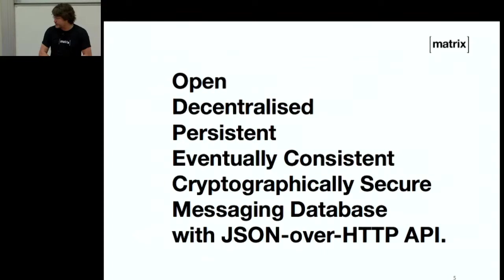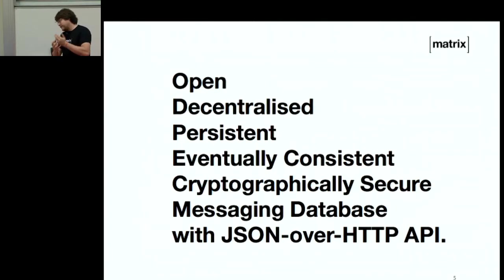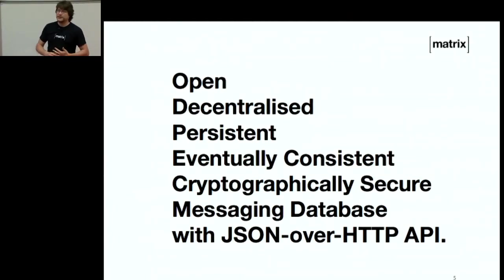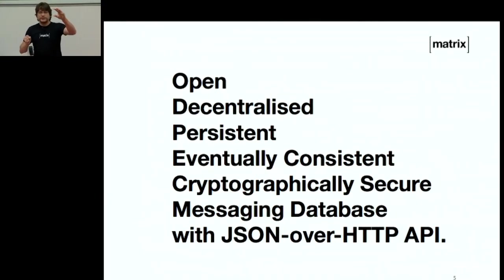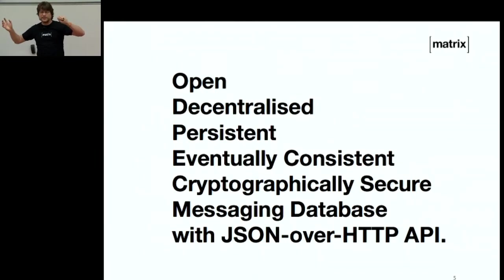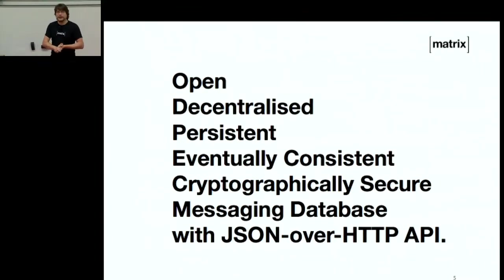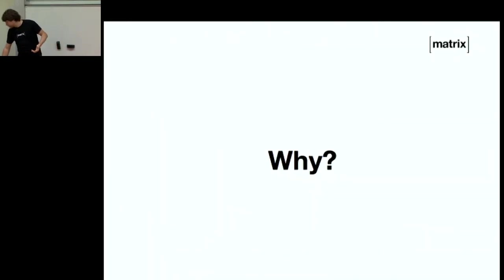From a techie perspective, you can think of us as an open, entirely decentralized, persistent, eventually consistent, cryptographically secure messaging database with a JSON over HTTP API. It's basically a decentralized object database with an HTTP API. You put JSON onto a server, it's signed by the server, it's replicated to the other ones — so it's kind of a bit like Git in terms of being a decentralized system, except rather than source control, it operates on communication or JSON — instant messages, VoIP, IoT signaling.